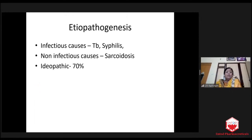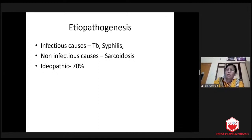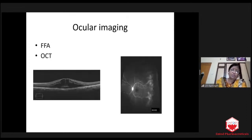TB, syphilis, sarcoid — very common causes, and idiopathic in 70% of cases. Once we rule out TB, we can give immunosuppressive. I have quite a lot of children with intermediate uveitis on either methotrexate, MMF, adalimumab, or even cyclophosphamide. For people who cannot afford adalimumab, I even give cyclophosphamide. It is very, very difficult to treat. FFA and OCT are our boon.